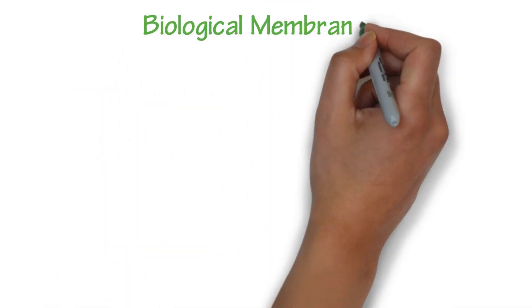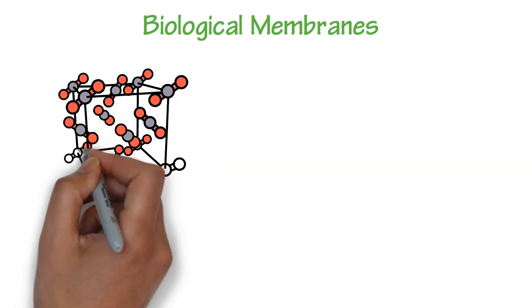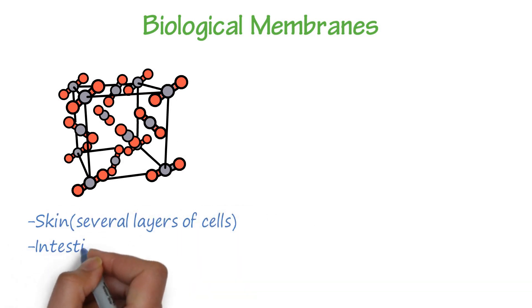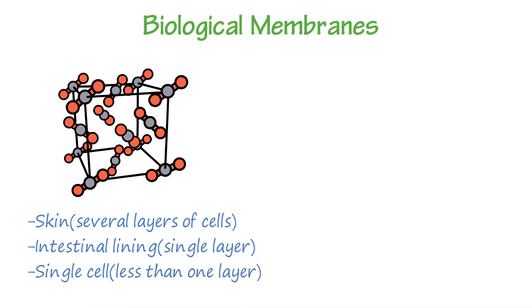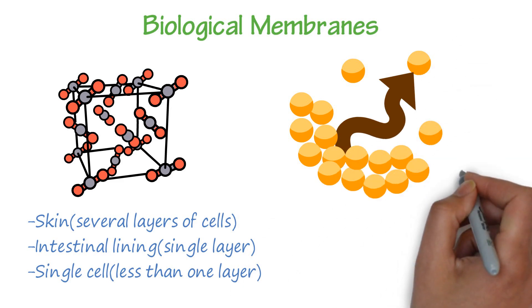Biological membranes are complex structures composed of lipids or fats and proteins. Three types of membranes: skin, several layers of cells; intestinal lining, single layer; and single cell, less than one layer.